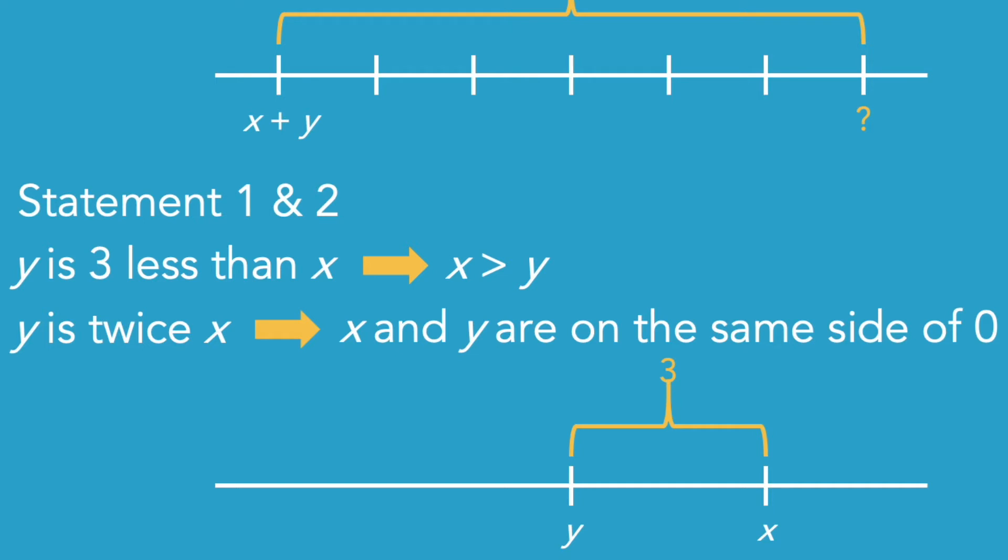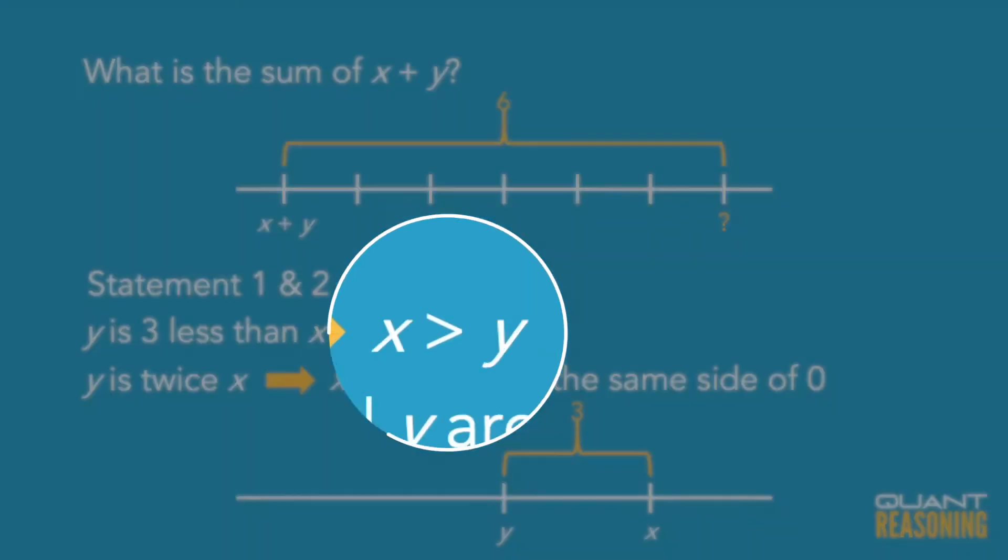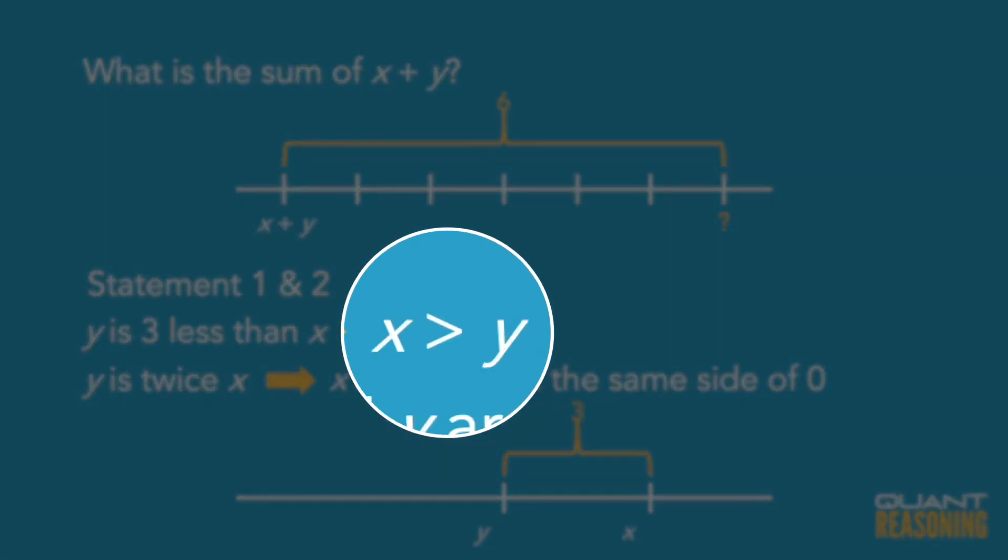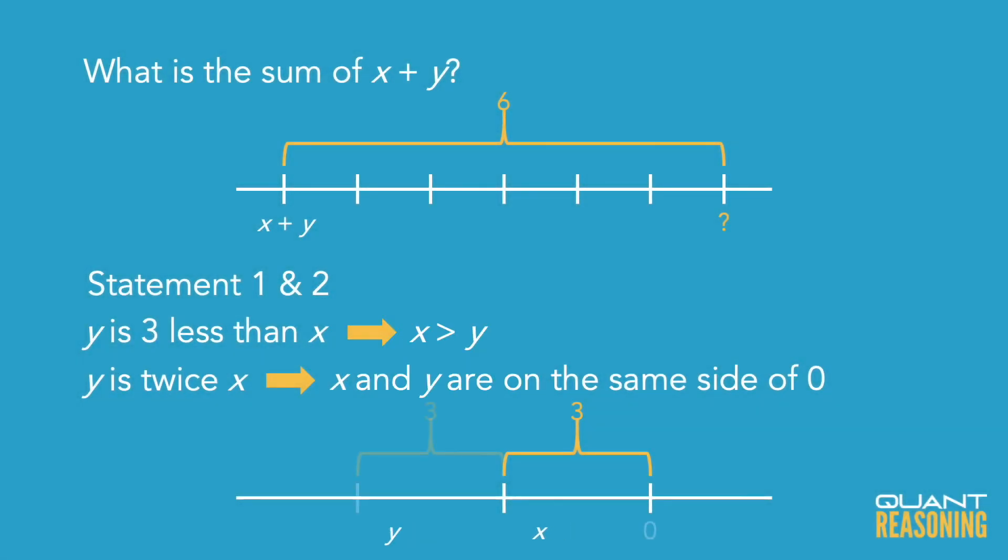But statement 1 doesn't just give us the difference between them, it also implies which is bigger and which is smaller. The smaller of the two numbers is also the number that's twice as far from zero, and of course we know the two numbers are on the same side of zero because their ratio is positive. We can infer that these numbers sit to the left of zero in the number line.